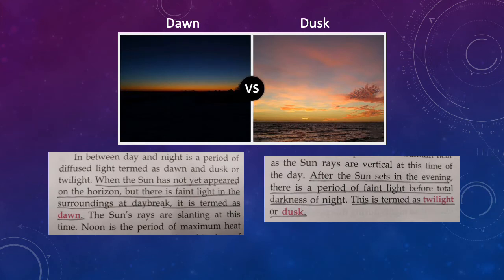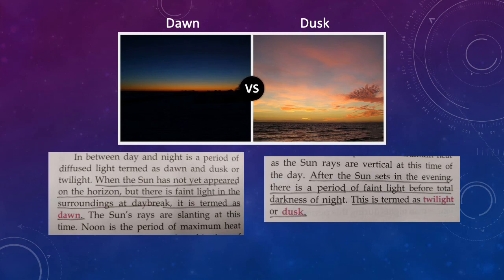Now, we do not have day or night suddenly — it does not get dark suddenly and it does not become lighted suddenly. If you get up early in the morning, around 5 o'clock, you will see that slowly the darkness is going away and light has started coming up. But the sun is still not visible. Slowly light appears and this is very diffused light, not very bright light — diffused light as we have in the morning before sunrise. So this time when the sun has not yet appeared on the horizon, the sun has not risen, but still there is faint light in the surroundings at daybreak, and this is called dawn. D-A-W-N.